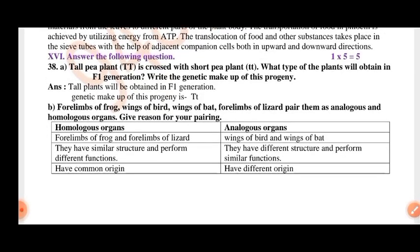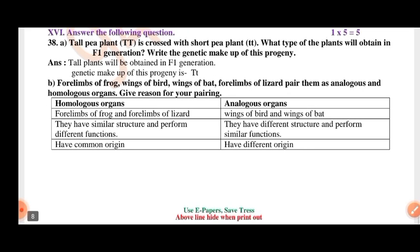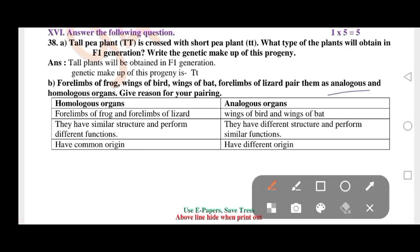Tall pea plant is crossed with short pea plant. What type of plants will be obtained in F1 generation? Write the genetic makeup of this progeny. Four limbs of frogs, wings of birds, wings of bats, four limbs of desert animals — identify them as analogous and homologous organs and give reasons for your pairing.